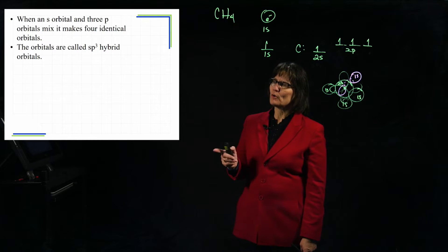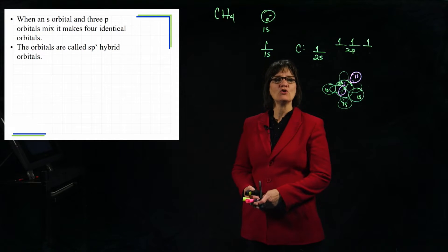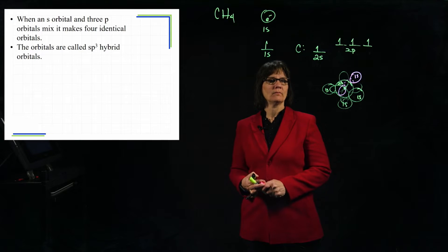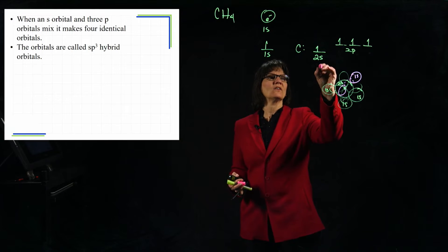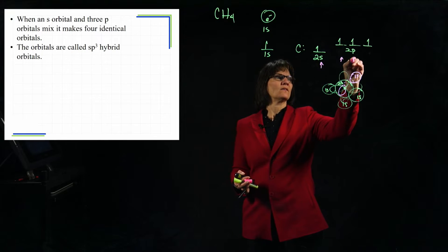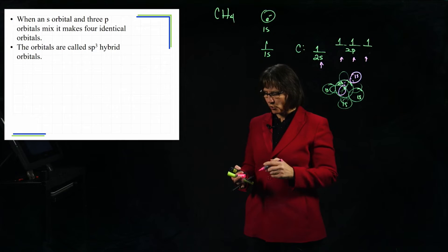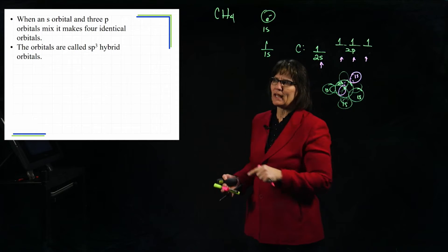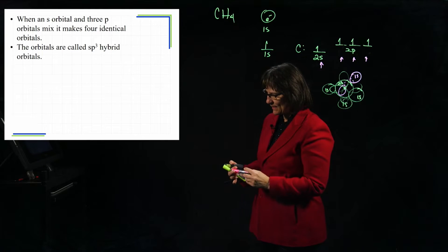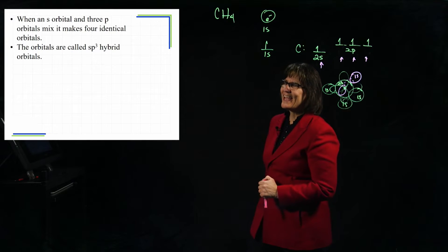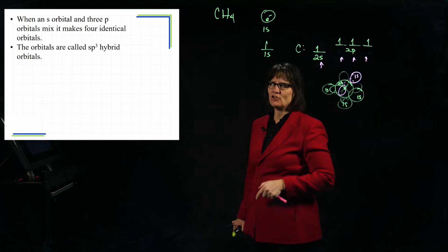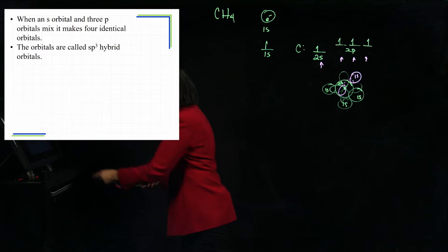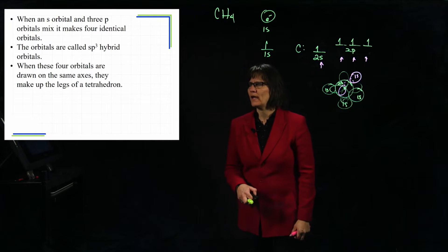These four new orbitals are named according to the orbitals that went in to make them. We had an s and three p's - we mixed those four together. And notice with s and three p's, we call it SP3. That's where it gets its name. That superscript three is telling me how many p's went into the mix - it's not telling me how many electrons are in there. It is a name of an orbital.